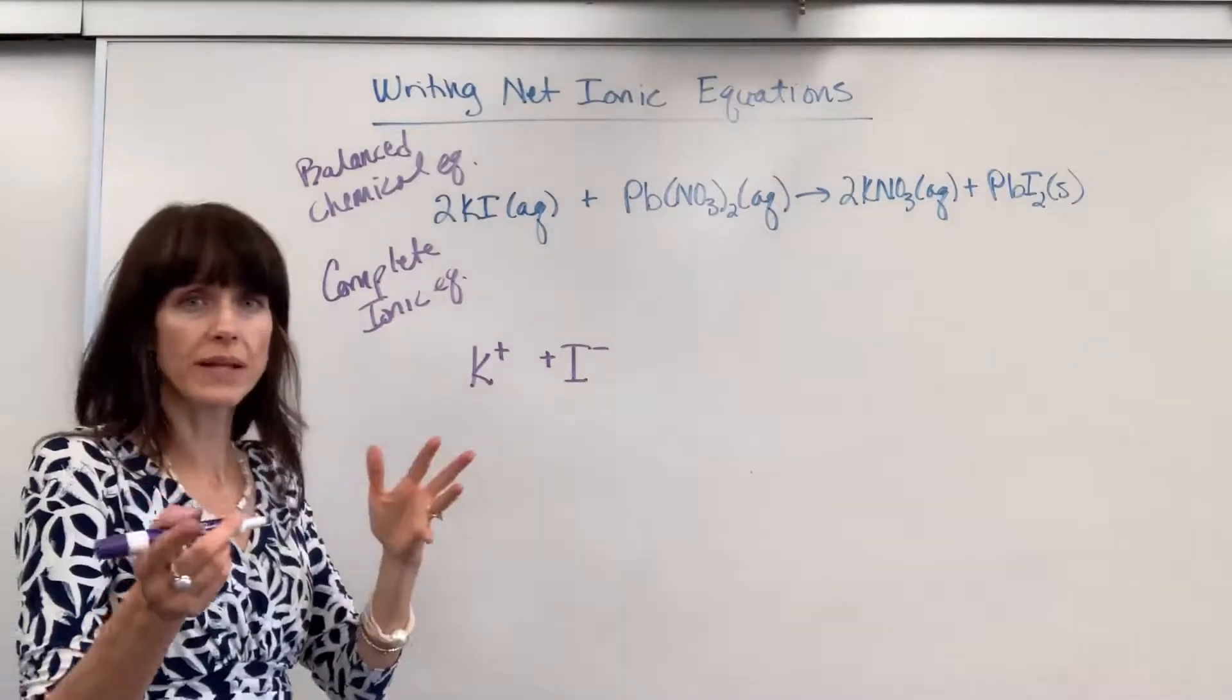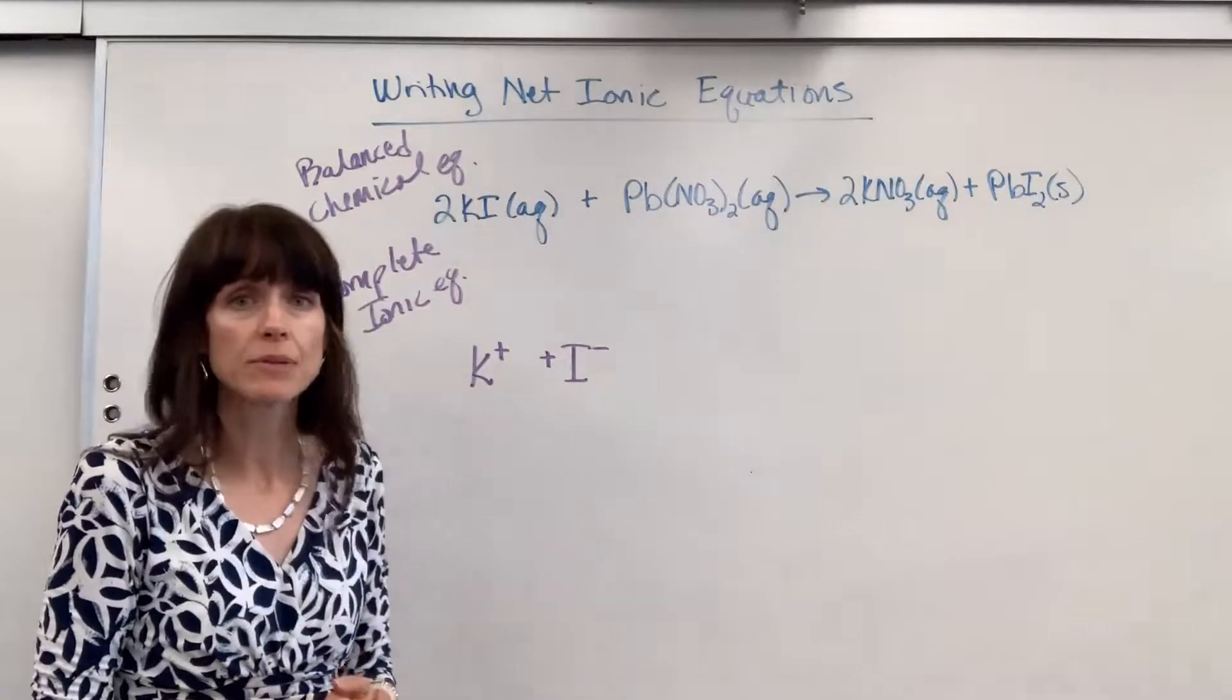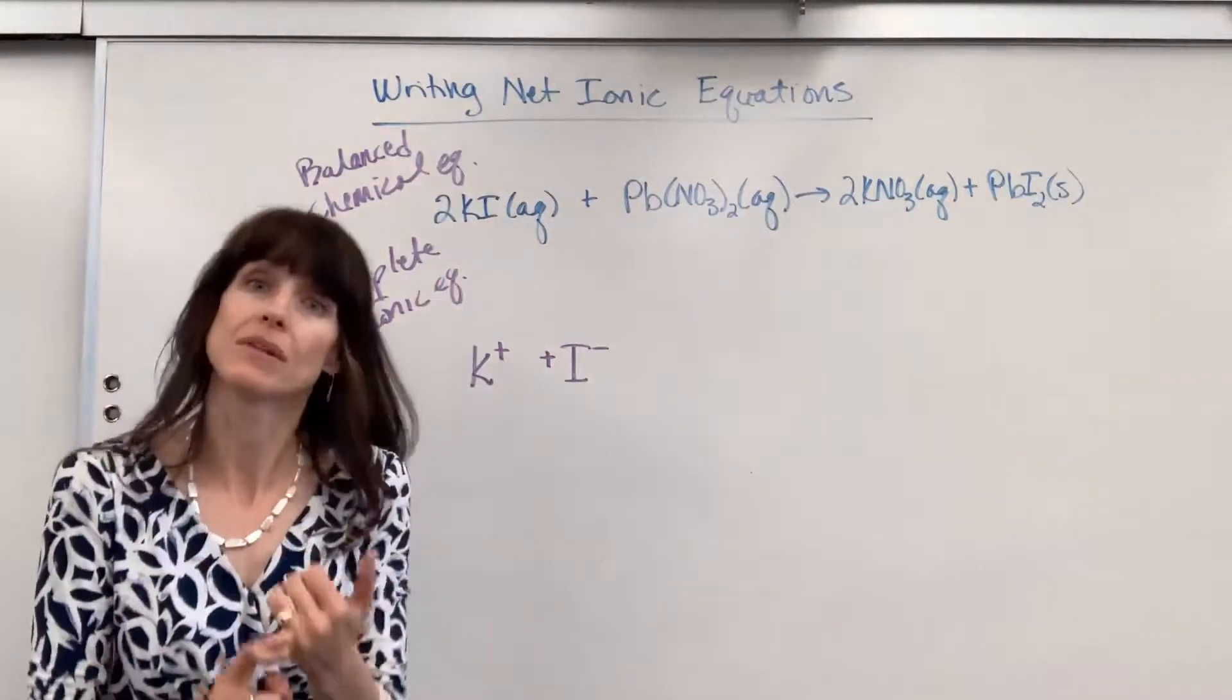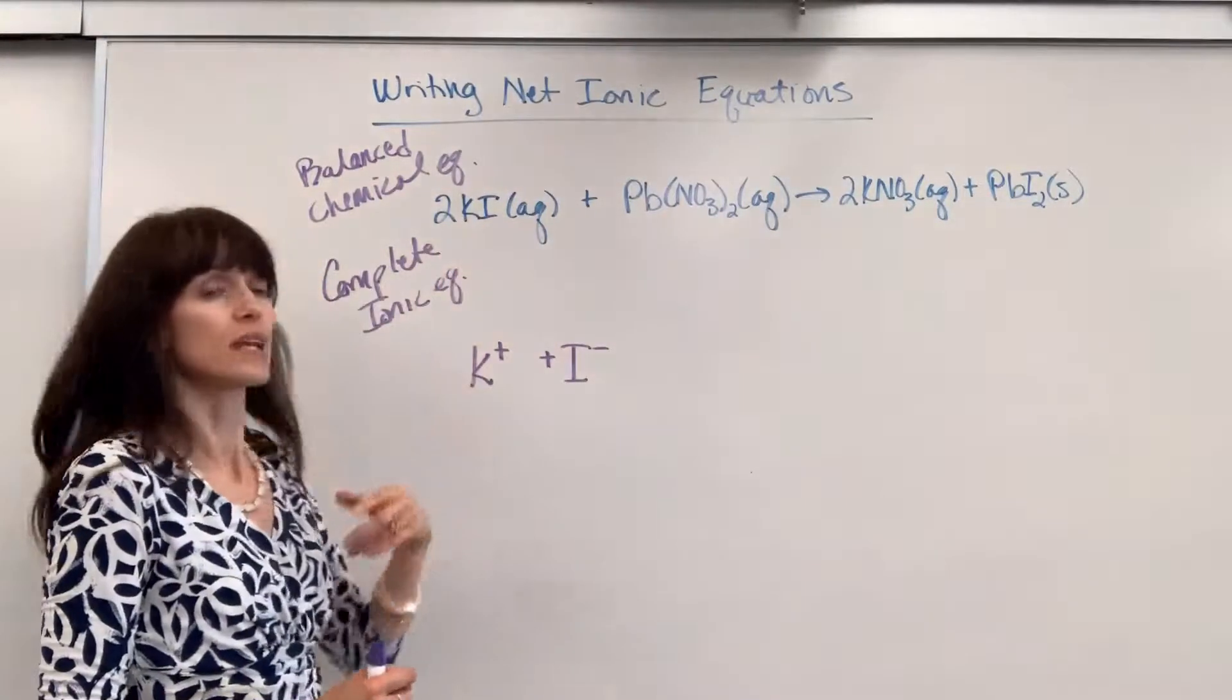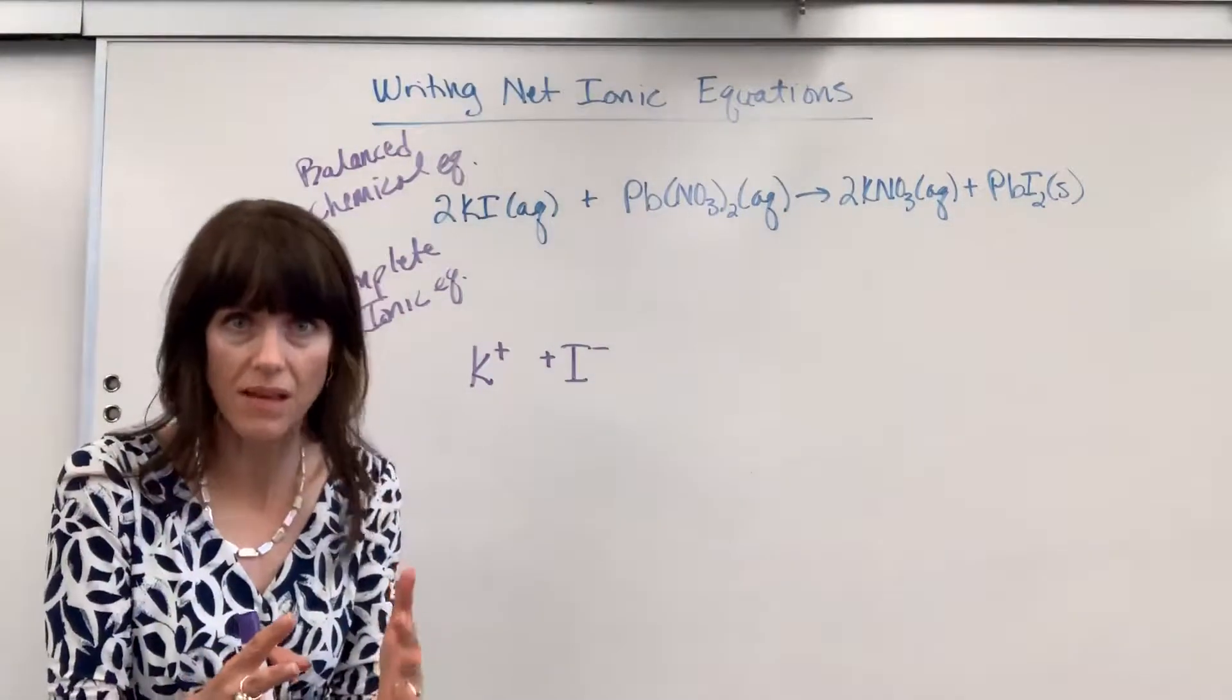Now, little reminder, if you need to look at the periodic table, look at the periodic table. The cation is always going to be the metal. The anion, the negative, is always going to be the non-metal.